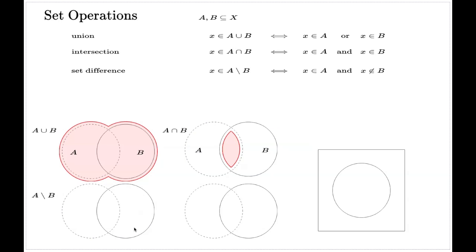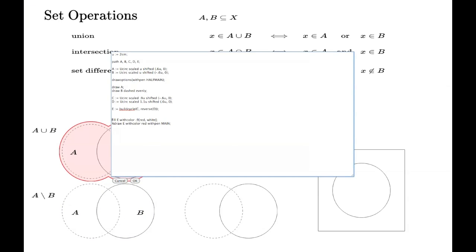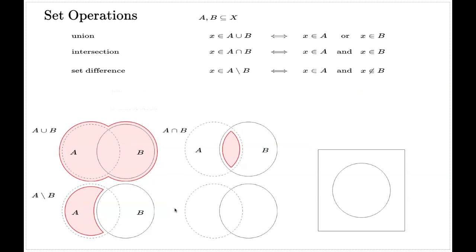On this diagram, the dashed circle is the set A and the solid circle is the set B. The difference of the sets is visualized as the part of A that does not overlap with B. These are the three basic set operations which we will use on a regular basis.